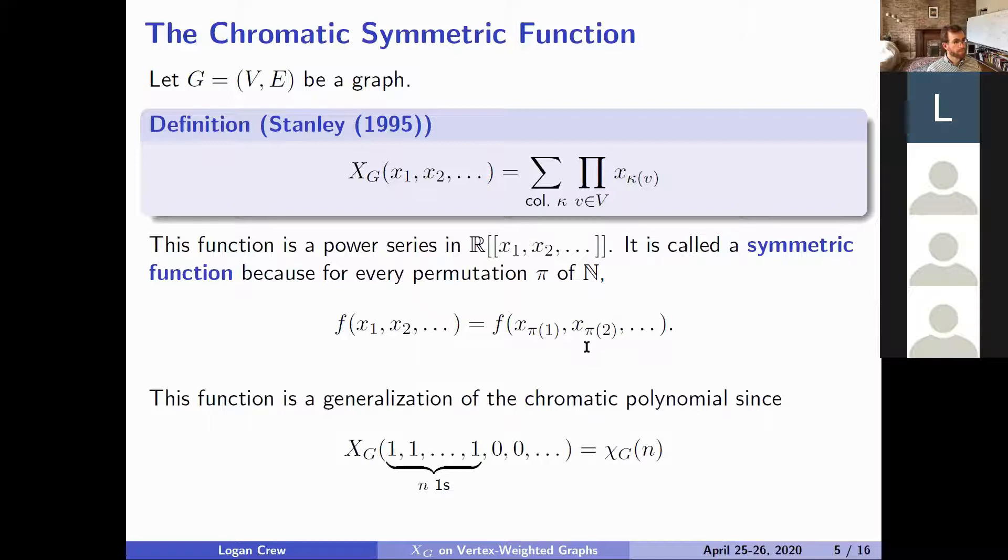It generalizes the chromatic polynomial because if we just set the first n variables to one, then this counts for exactly once each proper n coloring.